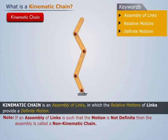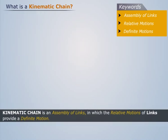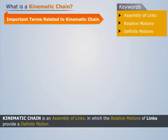Note that if an assembly of links is such that the motion is not definite, then the assembly is called a non-kinematic chain. The arrangement shown is a non-kinematic chain. Let us now discuss some important terms related to kinematic chain.